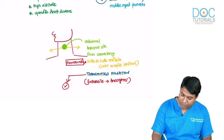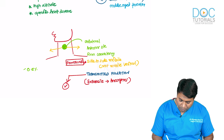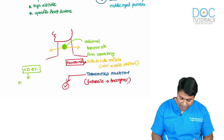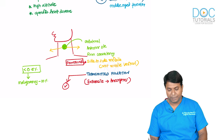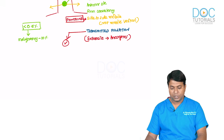The incidence of carotid body tumor is very rare — 0.5% or less. It can be malignant in around 10% of cases; it is usually benign but malignancy can occur.